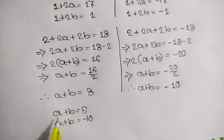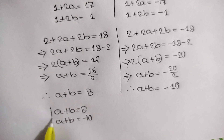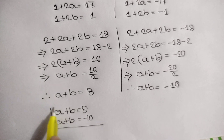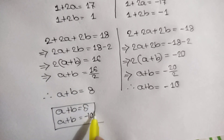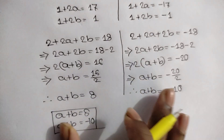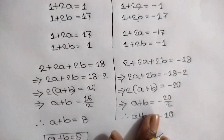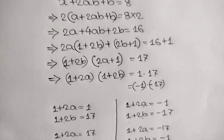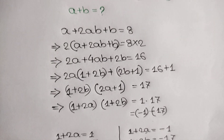So these are the two values of a plus b: 8 and negative 10. Thank you for watching. If you like this video, please subscribe to my channel and see you in the next video.